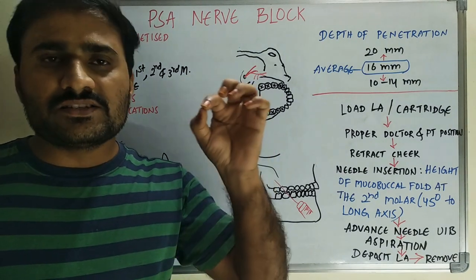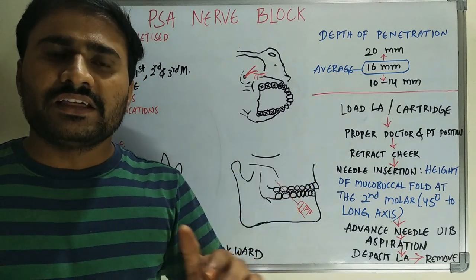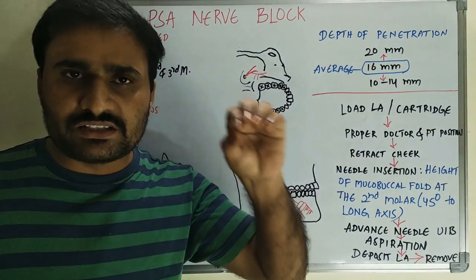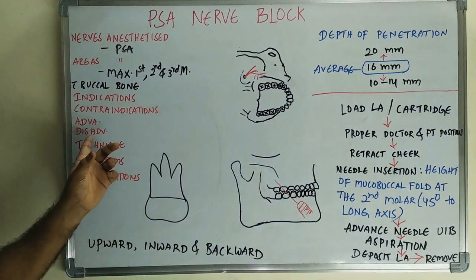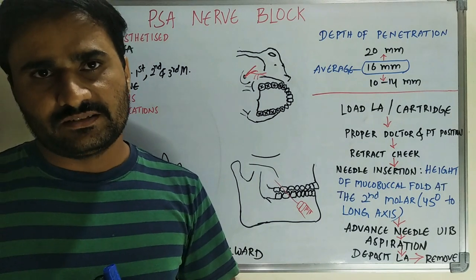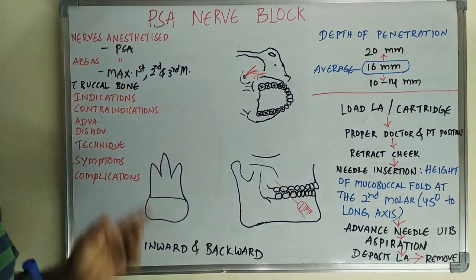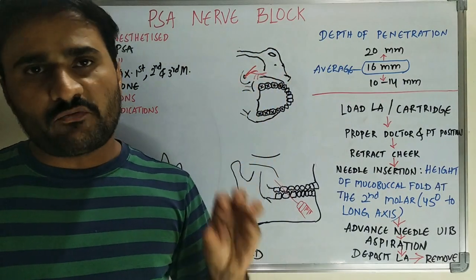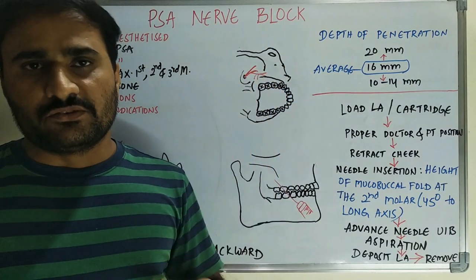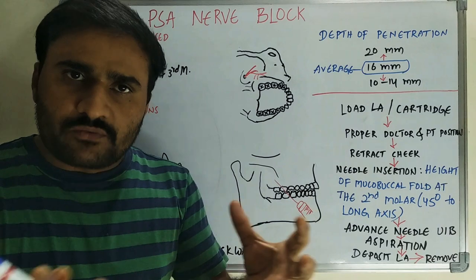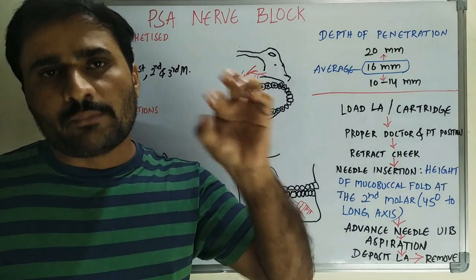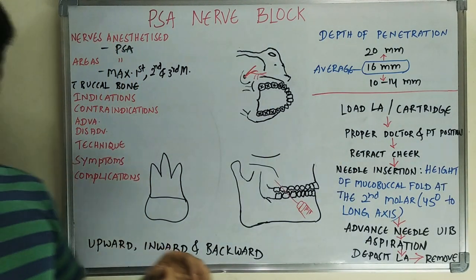It is almost atraumatic because there is no bony landmark — we will not touch bone — so pain while giving the injection is minimized. The disadvantage is that because there is no bony landmark, the technique is somewhat arbitrary or imaginary. The key disadvantage of the PSA is hematoma formation, because you are injecting solution into the pterygopalatine fossa region, which can accumulate a large volume of blood, leading to extraoral hematoma formation.